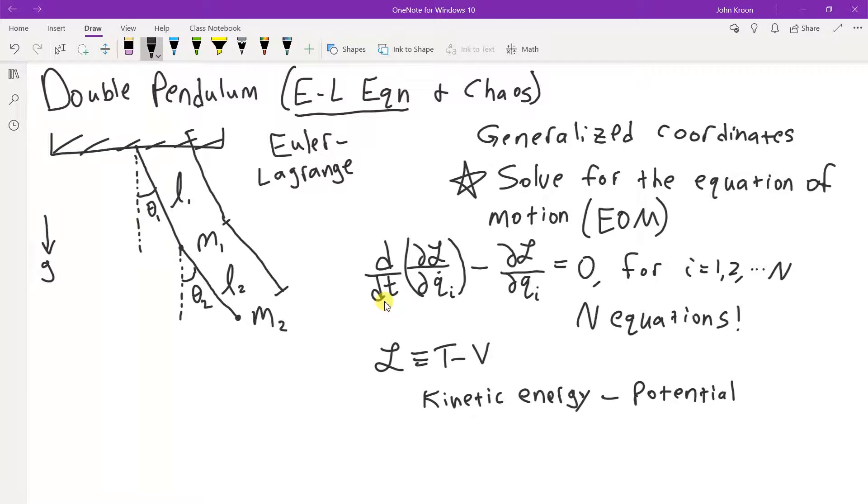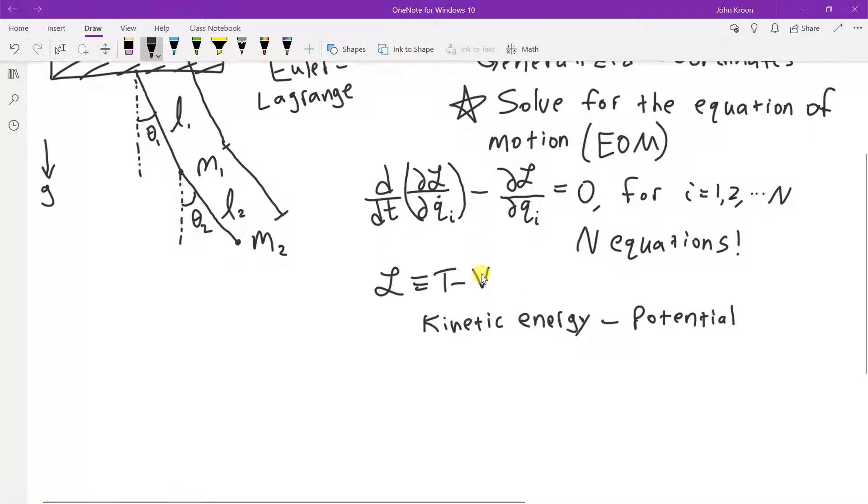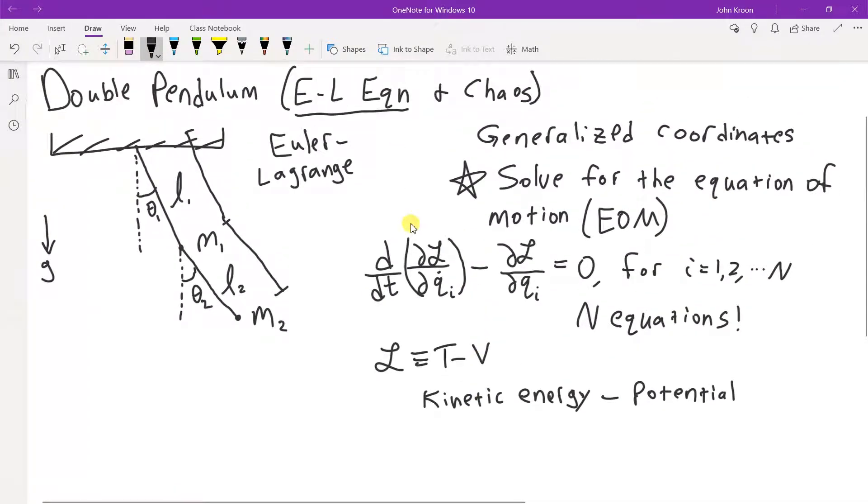And so we're going to keep everything super general in order to solve essentially an infinite number of problems at once. And that's something you could tell your friends. I solved an infinite number of problems in one fell swoop. So that's kind of fun. So let's look at this. So we know in our current problem we've chosen theta one and theta two for our generalized coordinates q1 and q2. So in this case we have n equals two.